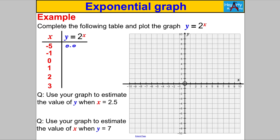For x = -5 we get 0.03125, x = -1 gives 0.5, x = 0 gives 1 (anything to the power of 0 is 1), x = 1 gives 2, x = 2 gives 4, and x = 3 gives 8. Plotting these and joining the dots gives us our approximation to the graph y = 2^x — what we call an exponential graph.